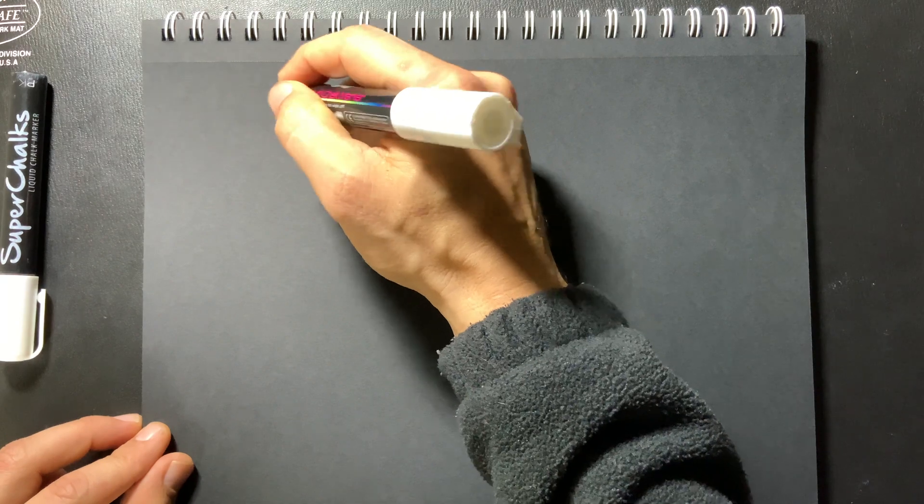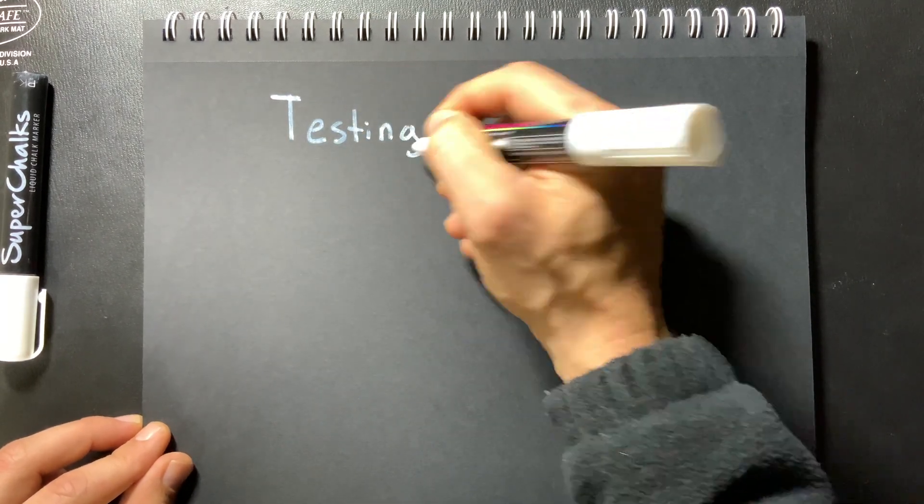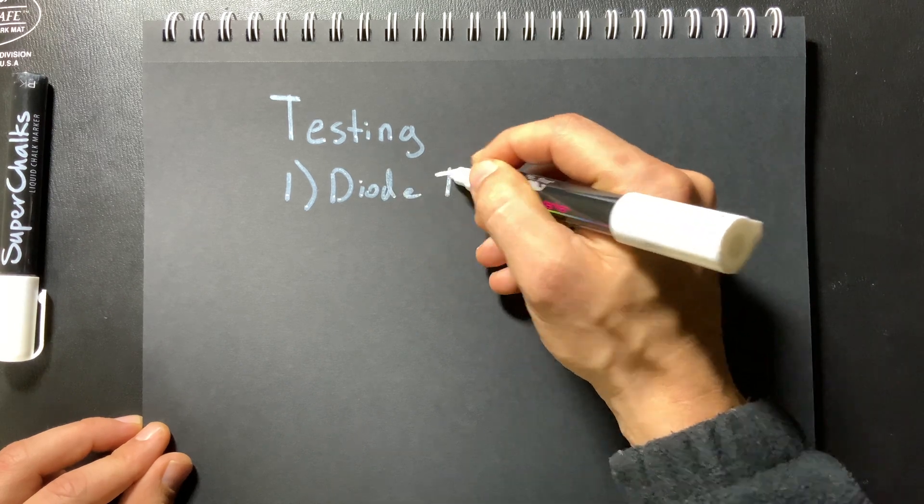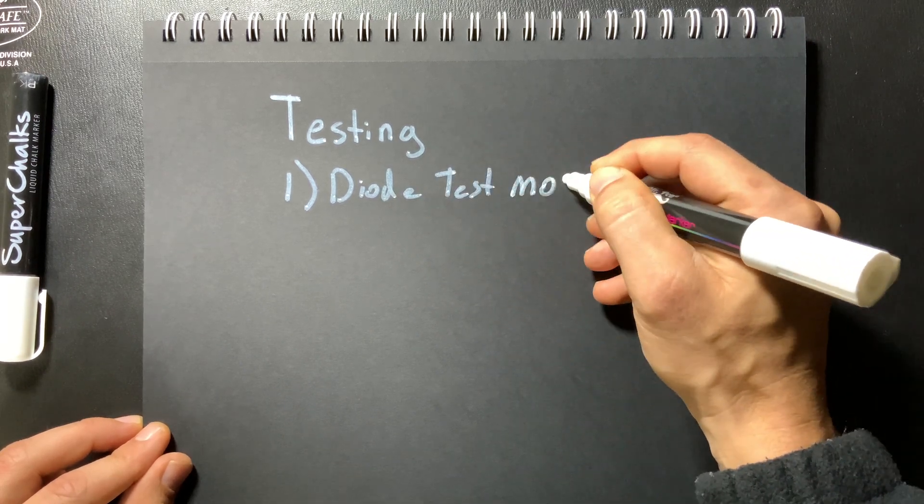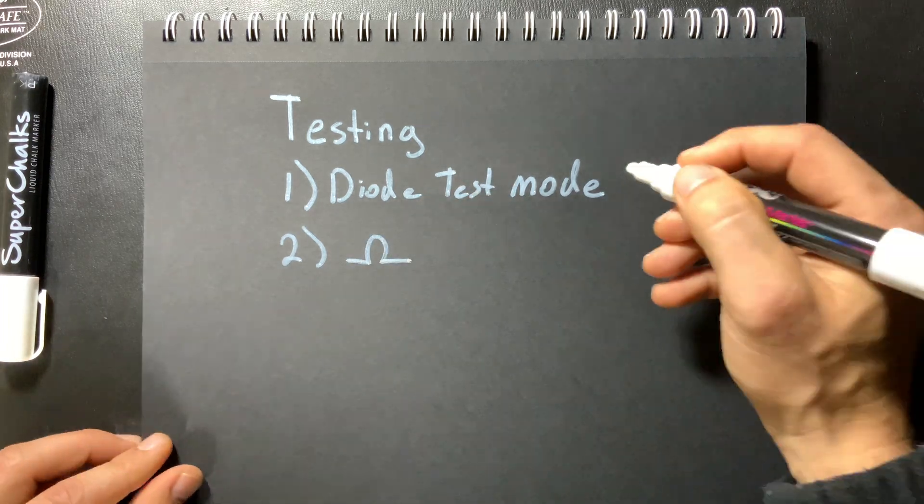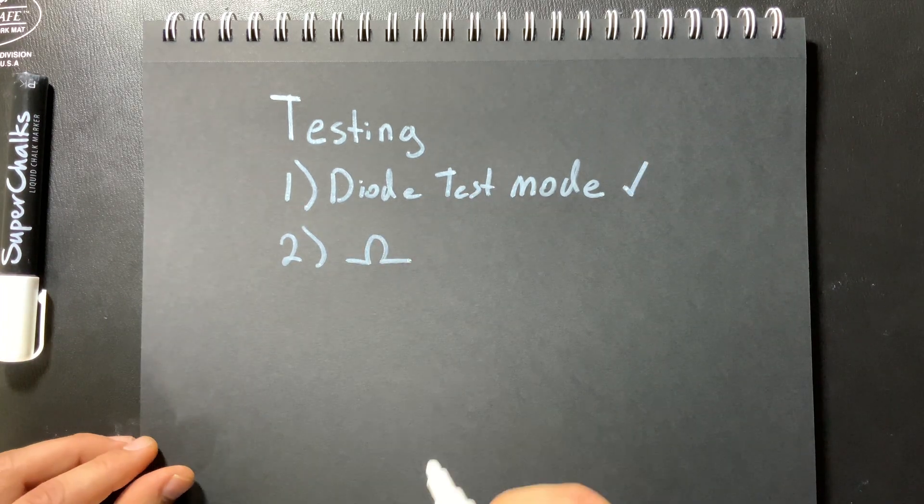So let's review some key points about testing diodes. So we went over two separate ways to test diodes. One uses the diode test function on your multimeter and that one's the best. Okay the other way is to use resistance. So if you can use diode test mode use that one.